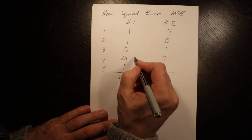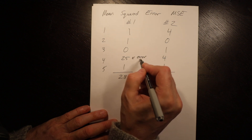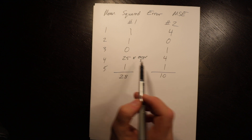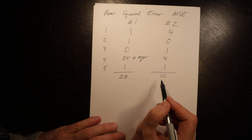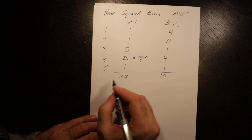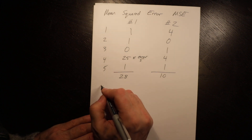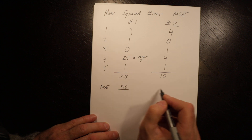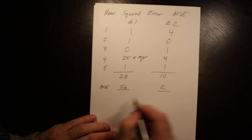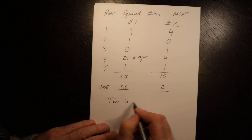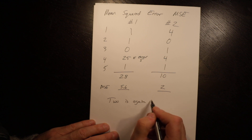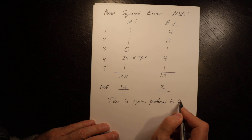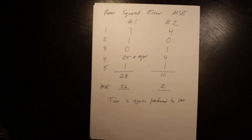You can see where method 1 had an error of 5, it really takes a hit for that bigger error. The mean squared error — which is just the mean — is 5.6 for method 1 and 2.0 for method 2. So method 2 is again preferred.